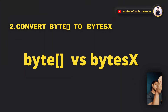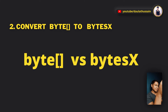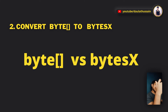Point number two: replace byte arrays with bytesX, because bytesX is cheaper. Byte arrays add 31 padding bytes between elements. Always use fixed-size value types like bytes1 to bytes32 — they are much cheaper than dynamic byte arrays. When you define variables in your smart contract, try to convert any byte array to bytesX.